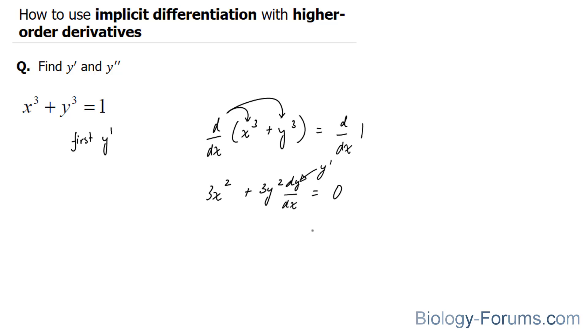So the next step is to isolate for y prime. That's not hard to do. We'll bring this term over, negative 3x squared. And also, on the left side, we're left with the following. So we have to divide both sides by 3y to the power of 2. And the 3's cancel out, leaving us with strictly x squared over y squared and the negative on the top. So that is the first derivative.